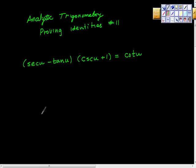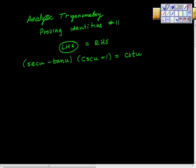Analytic trigonometry, proving identities — this is number 11. Our job here is to prove that the left hand side is the same as the right hand side by only changing one side or the other, and I choose the left hand side. The first thing I'm seeing is that secant is 1 over cosine and tan is sine over cosine, so I think I can put those together.